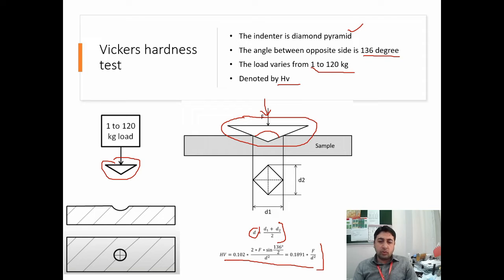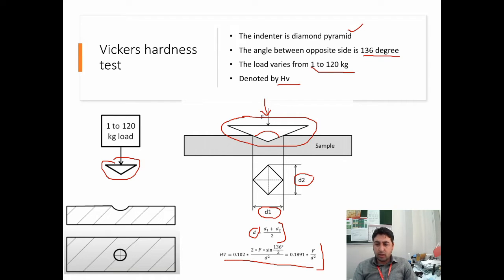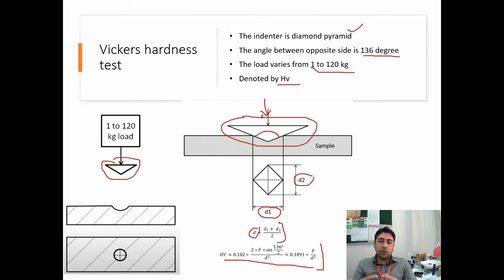In this experiment, which we will now perform in the lab, I will test one material to find the hardness number. Since we are doing the lab for online learning, you cannot perform it here, so I will provide you the D1 and D2 values. You have to find the hardness number of the material and then tell me in the report which material it is, by comparing hardness numbers in the online library.